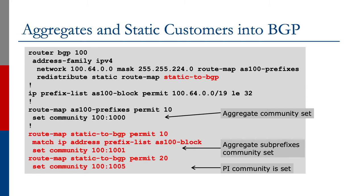For permit 20, which has no match command, you set the community to 1005, meaning these are prefixes from customers out of their PI space. The prefix list s100-block needs to contain all the address space that AS100 uses — in this case just a single /19, but if AS100 had other address space, you would need to add it to this prefix list as well.